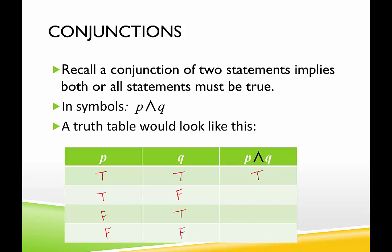In the next row, P is true and Q is false — 'the sky is blue and the grass is purple.' That is a false statement because both pieces must be true, and the grass is not purple, so the conjunction is false. If P is false and Q is true — 'the sky is orange and the grass is green' — that is also false because one piece is false. And if both statements are false — 'the sky is orange and the grass is magenta' — that is definitely false. So for a conjunction to be true, both statements must be true.